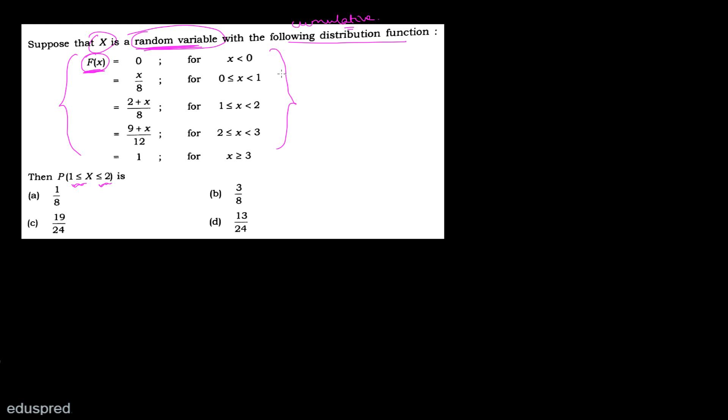If x is a discrete random variable, the equal-to sign matters and we cannot ignore it. If x is a continuous random variable, we do not give importance to the equal-to sign. So identifying the type of random variable is critical.